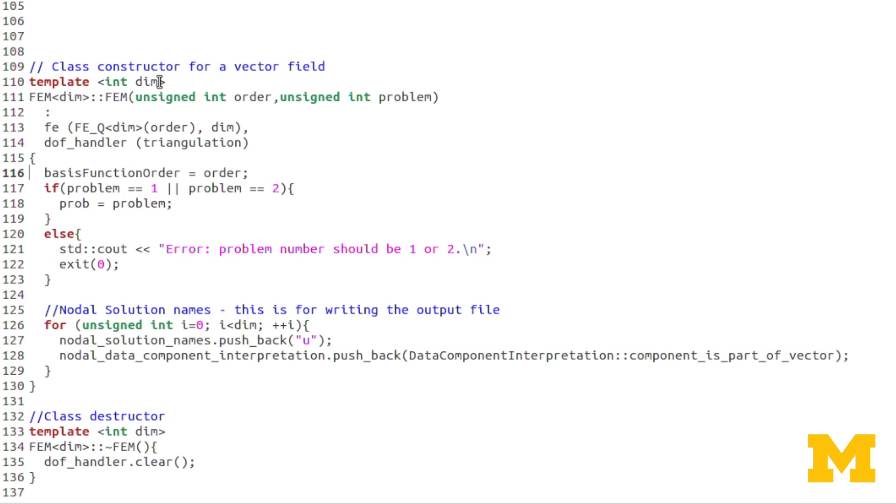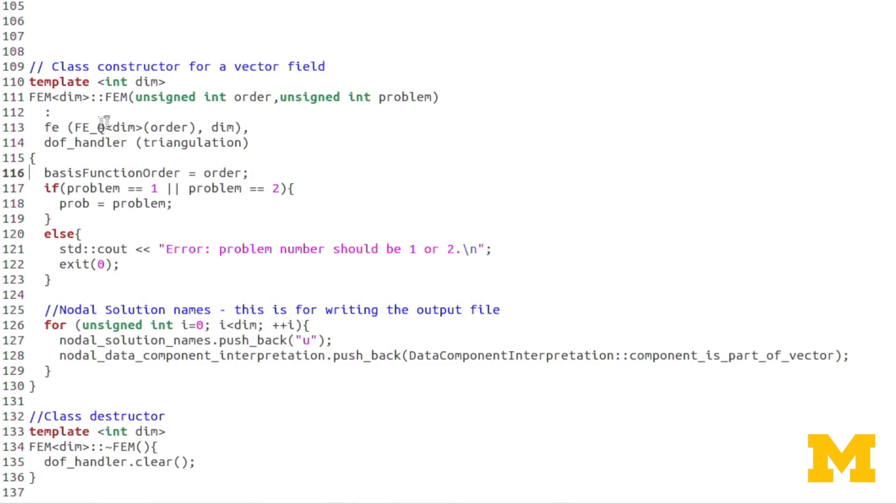Now again, this is the template parameter I was talking about in main.cc, and we input a 1. So any time we see DIM in this template, it will actually be 1, because that's what we've declared it as in main.cc.